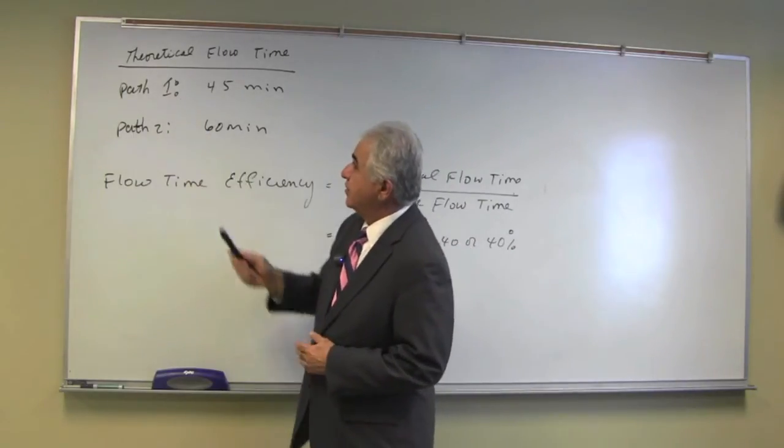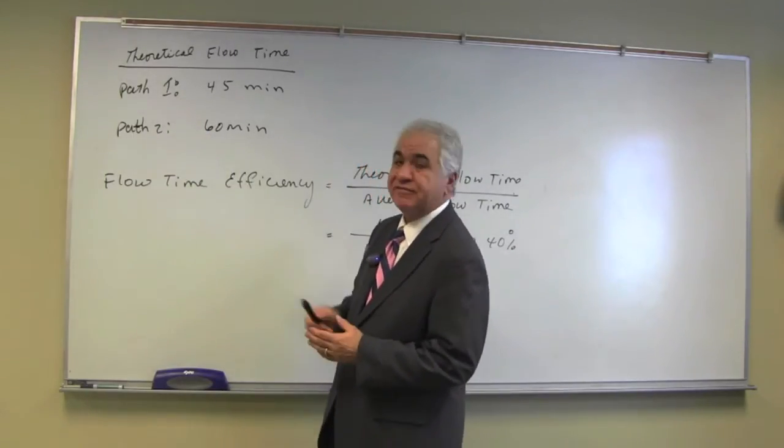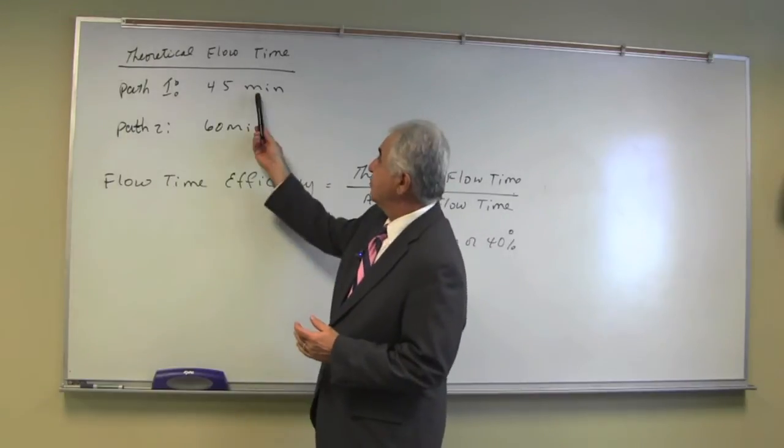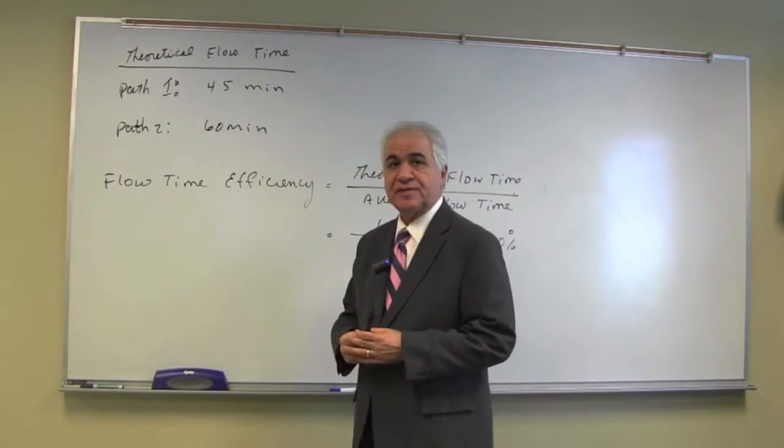For path one, the theoretical flow time, which is the sum of activity times on that path, is 45 minutes, and path two is 60 minutes.